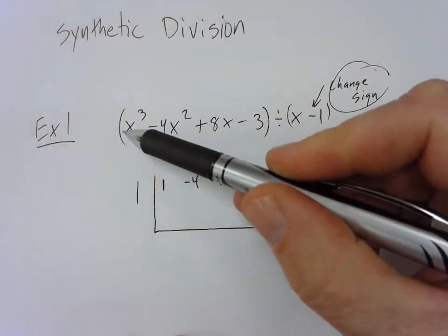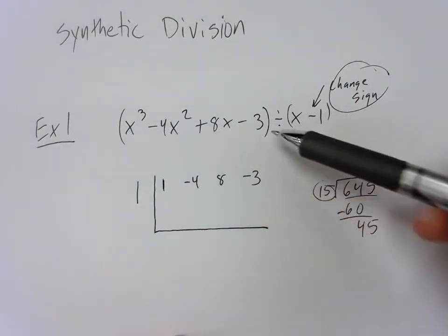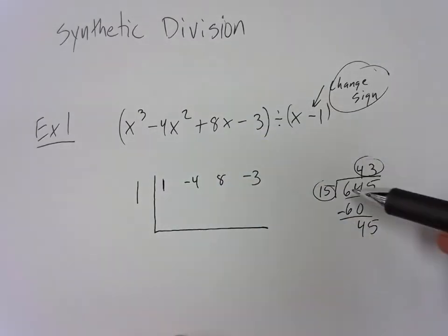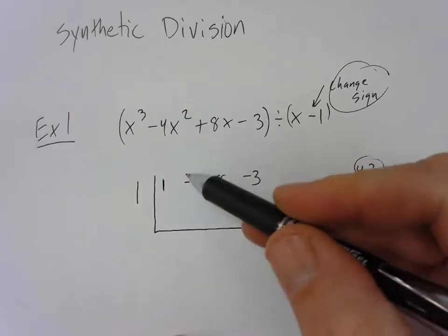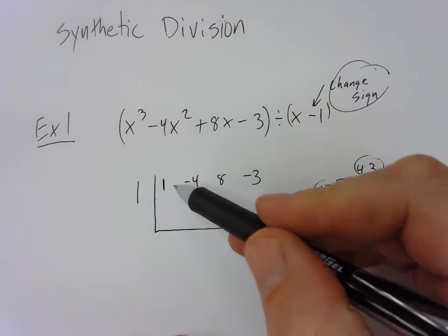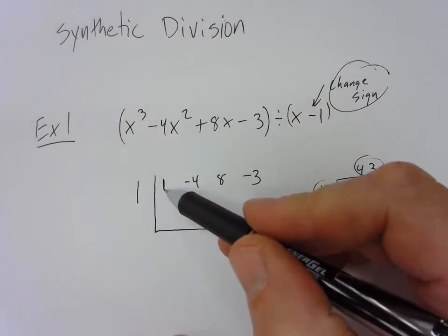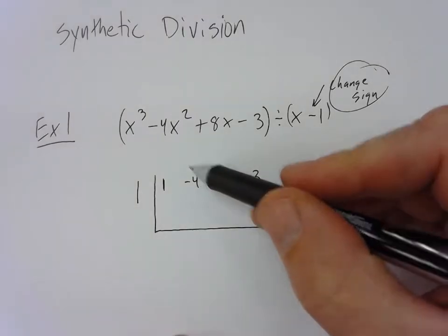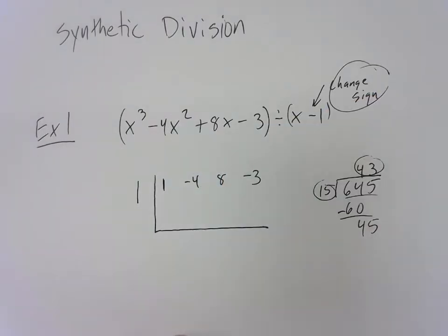Now where are these numbers coming from? These are the coefficients in each term of the polynomial. We don't really need the x's. Like over here with the 6, we know that 6 means 600. It's in the third position. Well this 1 right here is in the fourth position so we know that that means 1x to the third power. And just like this 4 here means 40, this negative 4 here is attached to an x squared. So we don't really need the x's.